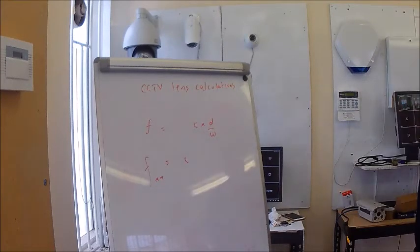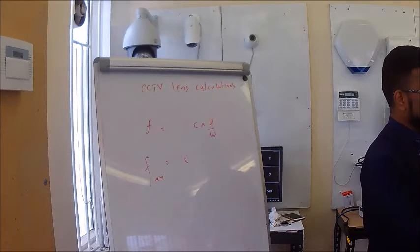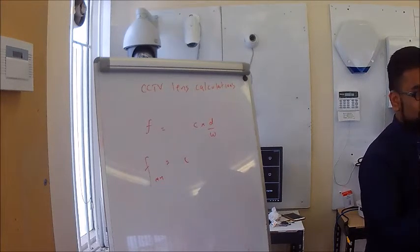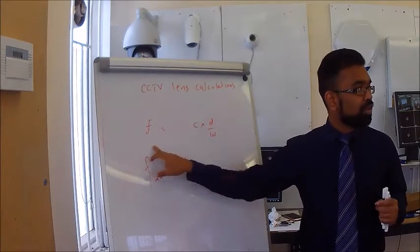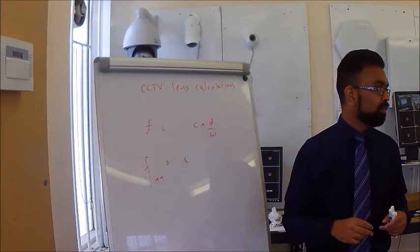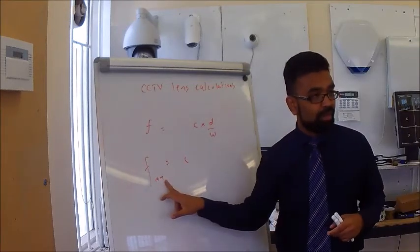You know the one that we did yesterday, C, S mount and C mount lens, that one also comes in different sizes. So that is what we are trying to find, which would be the best size to use for a given scenario. So F is always in millimeters.